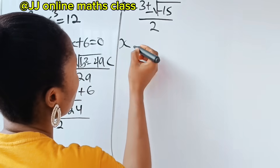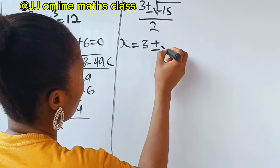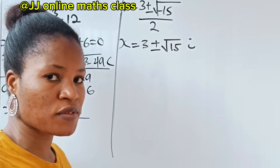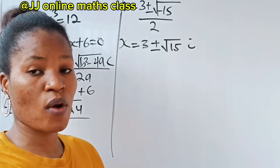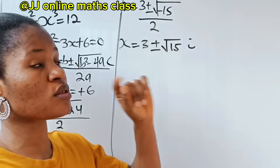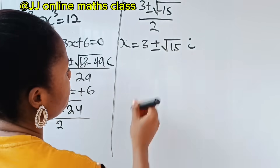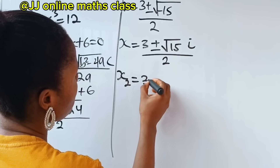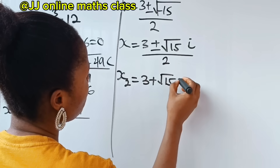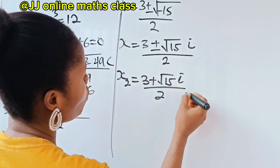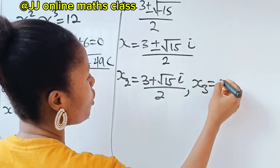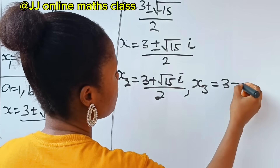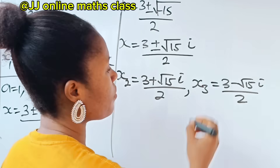So we now have our x equal to 3 plus or minus square root of 15i, because the square root of minus 15 is square root of 15 multiplied by square root of minus 1, and square root of minus 1 is i. Divided by 2. So x₂ is equal to 3 plus square root of 15i all over 2, and x₃ is equal to 3 minus square root of 15i divided by 2. Thank you so much for watching. Have a lovely day.